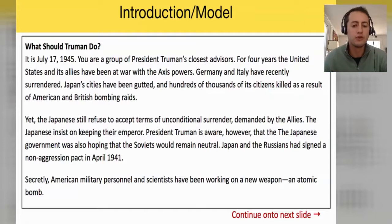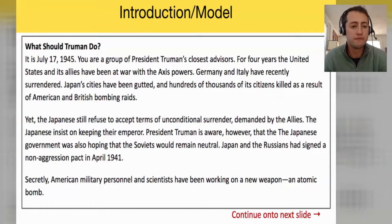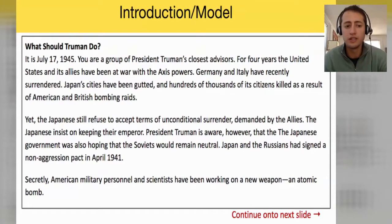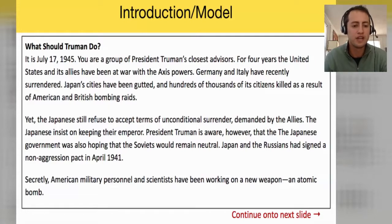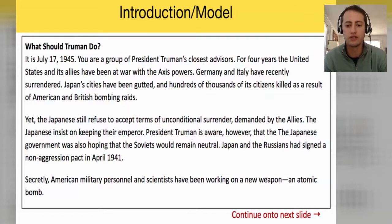What you're going to do today is read short blurbs that give you information about the debate before the use of the atomic bomb. You're going to act as a close advisor to President Truman and give him advice on the advantages and disadvantages of using the atomic bombs in Japan. Let's read this together, and then we're going to do the first one together before you jump into the rest on your own. It is July 17th, 1945. For four years, the United States and its allies have been at war with the Axis powers. Germany and Italy have recently surrendered.